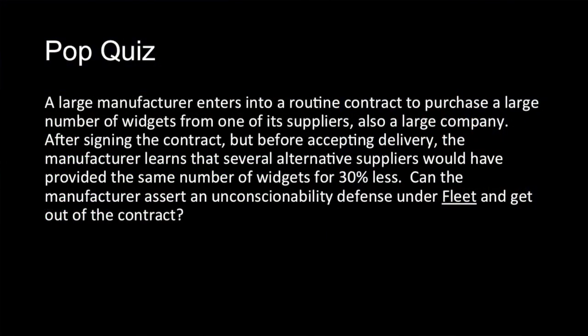Let's imagine the following quiz. A large manufacturer enters into a routine contract to purchase a large number of widgets from one of its suppliers, also a large company. After signing the contract, but before accepting delivery, the manufacturer learns that several alternative suppliers would have provided the same number of widgets for 30% less. Can the manufacturer assert an unconscionability defense under Fleet and get out of the contract?